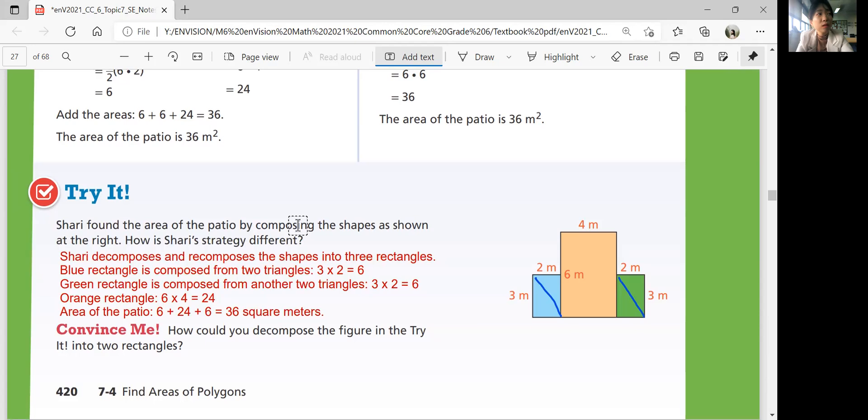Convince me, how could you decompose the figure in the try it into two rectangles? You can divide the orange rectangle in half horizontally like this.